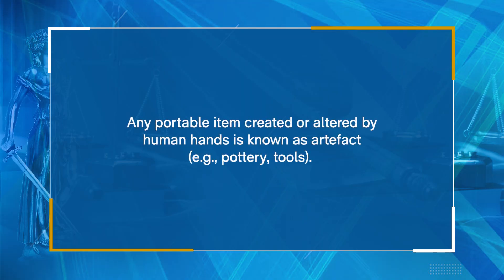Archaeologists also employ the term culture in a more specialized, technical sense in connection with significant concepts such as assemblage, artifact, and industry. Any portable item created or altered by human hands is known as an artifact — for example, a piece of pottery or a stone tool. An industry is defined by similar artifacts made of the same material discovered at the same site, for example a microlithic industry or a blade and burin industry. An assemblage is made up of all the industries located at a certain site, and when identical assemblages are discovered at numerous sites, those sites are assumed to be part of the same archaeological culture.